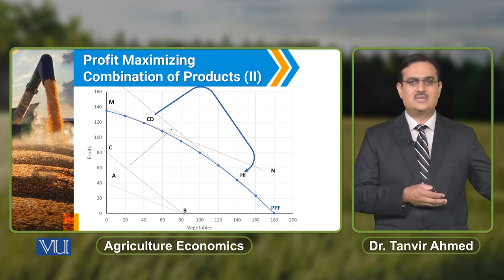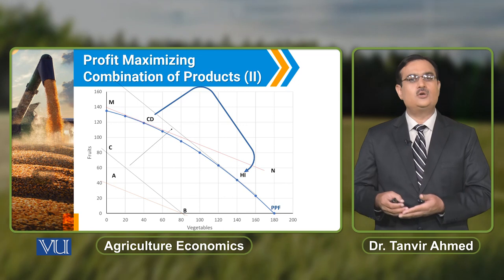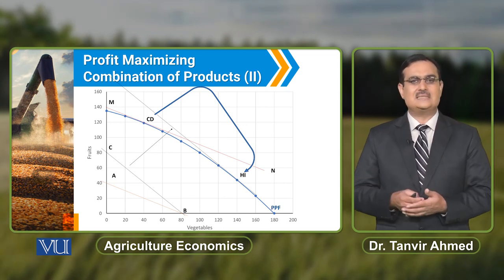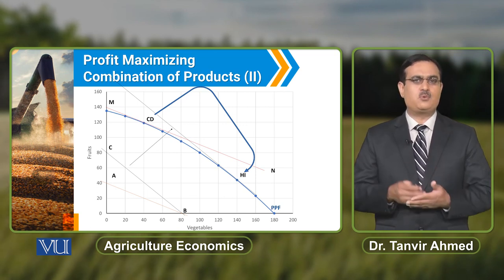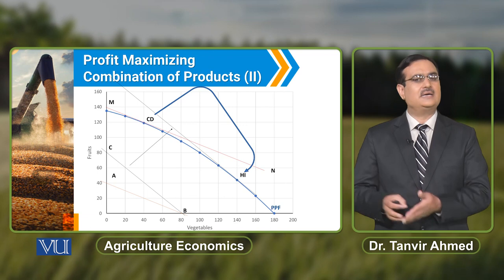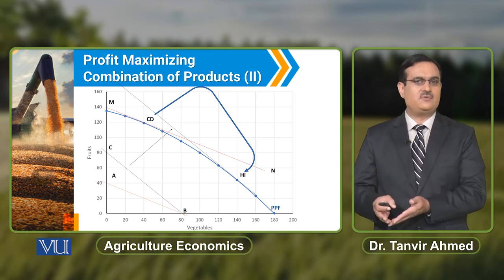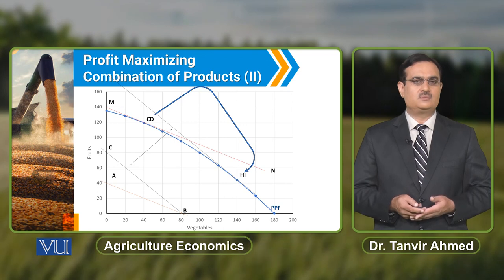When the price of fruits decreases and the price of vegetables is unchanged, to maximize profit the farmer has to increase the production of vegetables and decrease the production of fruits. At the HI point, under the new market condition, the slope of the ISO revenue curve is equal to the slope of the Production Possibility Frontier.